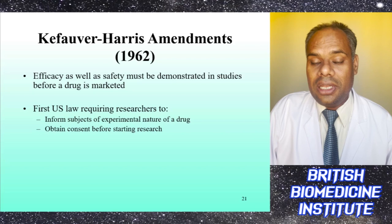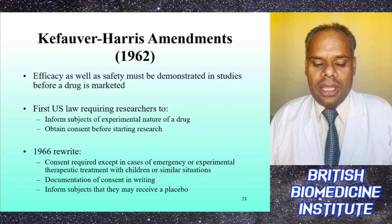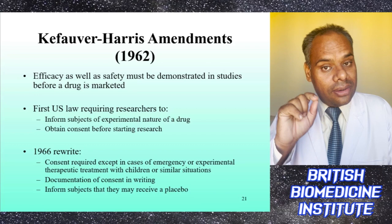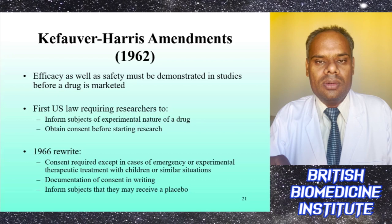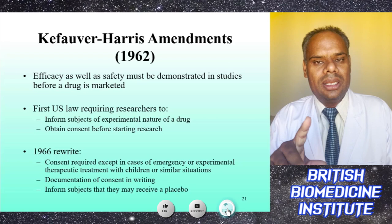In 1966, consent requirements were rewritten. Consent was required except in cases of emergency, experimental therapeutic treatments with children, or similar situations. Documentation of consent must be written in the presence of the CRC and patient in the source note form. Informed consent must also inform subjects that during the treatment they may receive a placebo or the best available therapy.